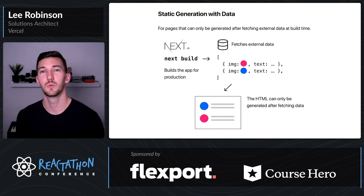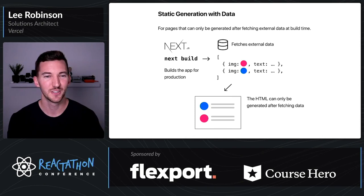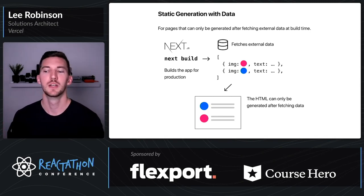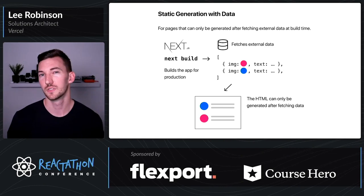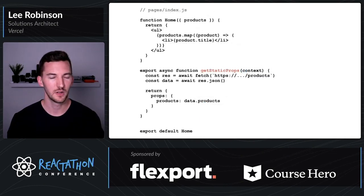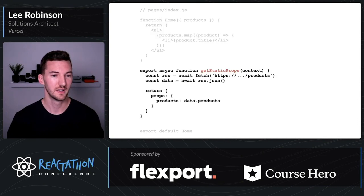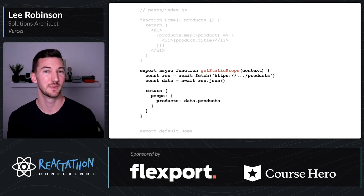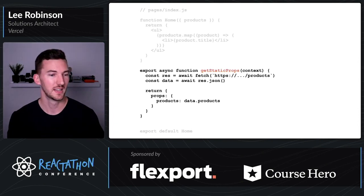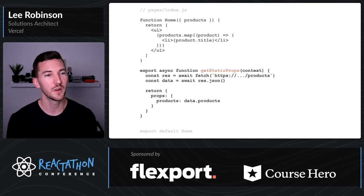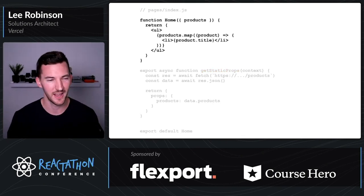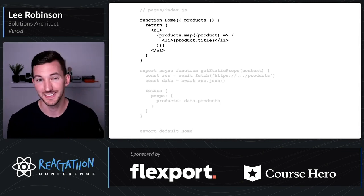You probably also want to do static generation with some external data sources. For pages that need to fetch data, when you run next build it will fetch that external data — for example, information about your products or blog posts — and then the HTML is generated after that promise resolves. The main thing to focus on is getStaticProps. When this function is exported from your page, you can make an API call to fetch products, return those products as props, and they're forwarded to your React component. Then you can iterate over those products and display them as a list.